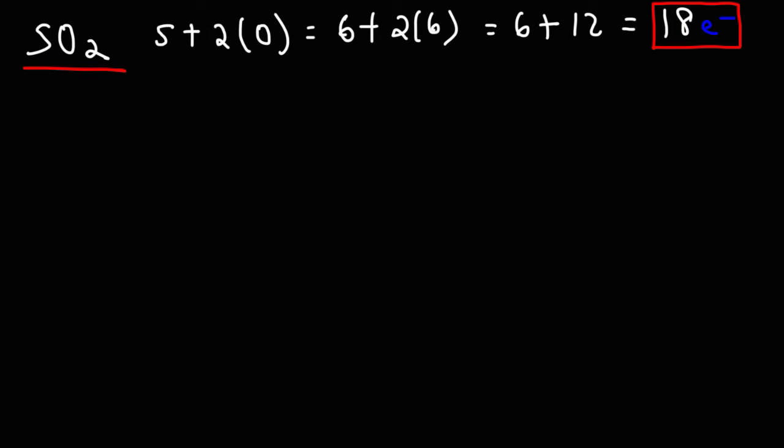Now how can we use this to draw the Lewis structure of SO2? What you want to do is identify the highest multiple of 8 just under 18. So multiples of 8 are 8, 16, 24, and 32. 16 is the highest multiple of 8 just under 18. If you subtract 18 by 16, you get 2. This is the number of electrons on the central sulfur atom. Two electrons corresponds to one lone pair.